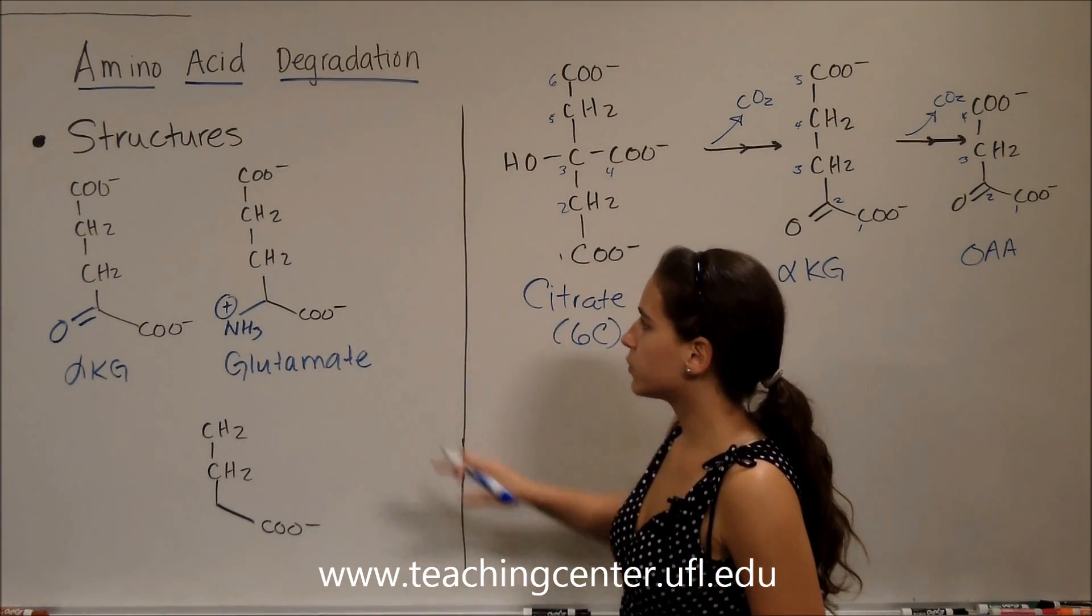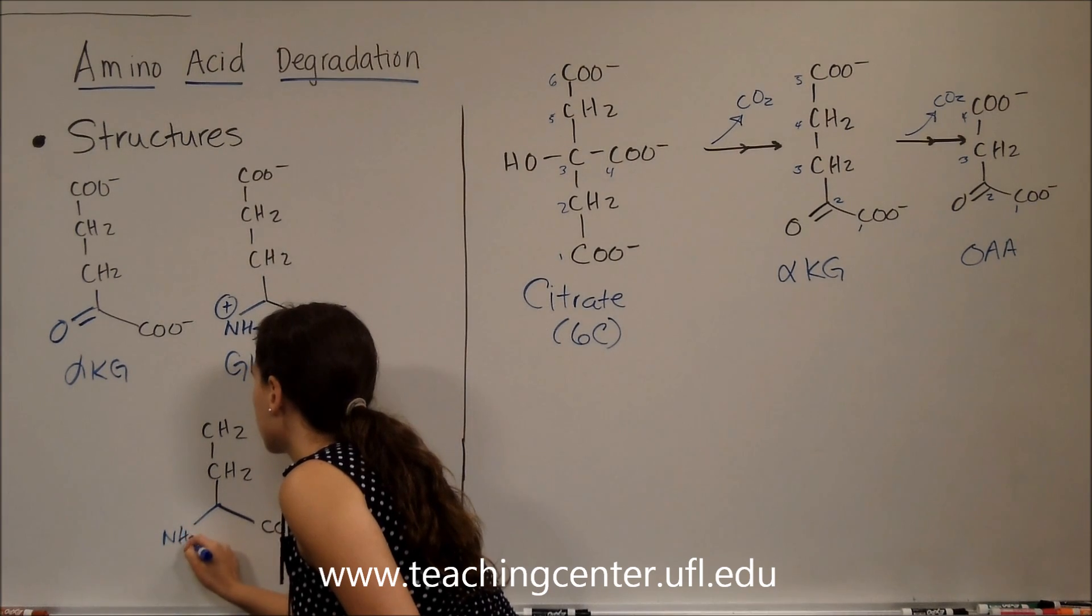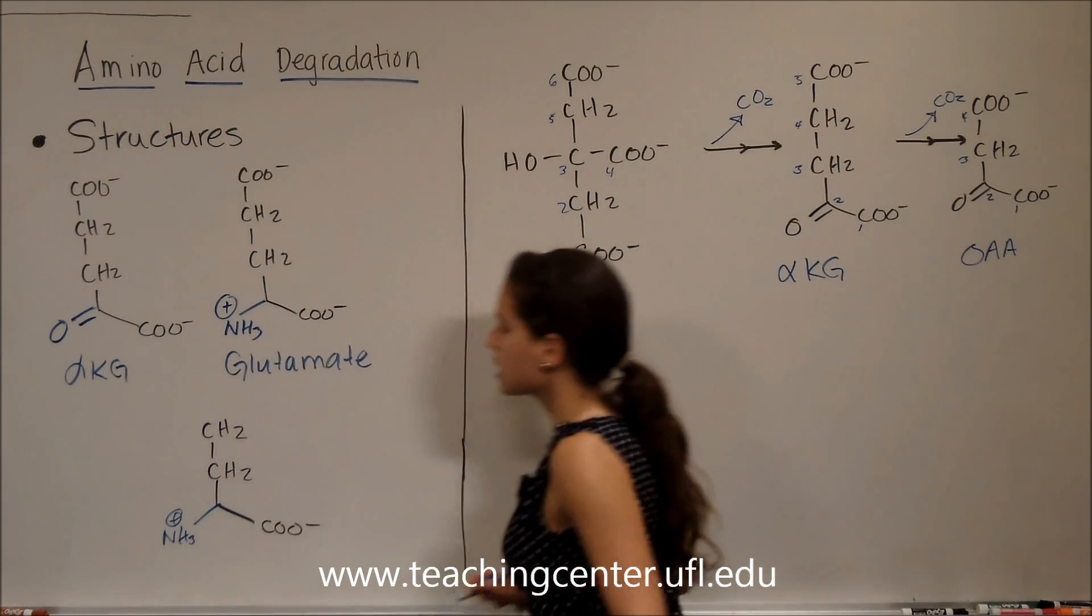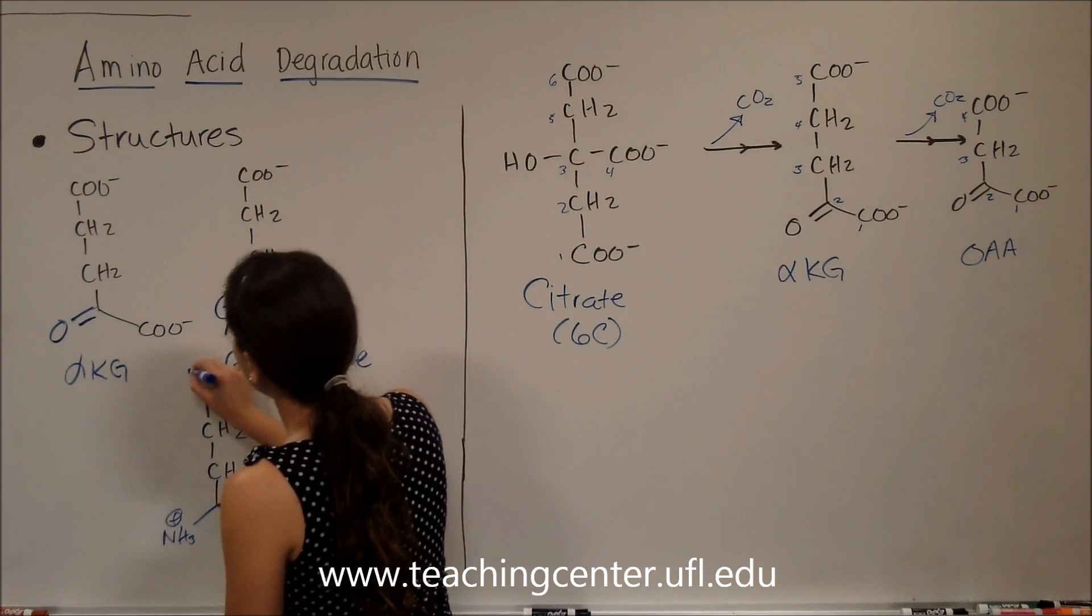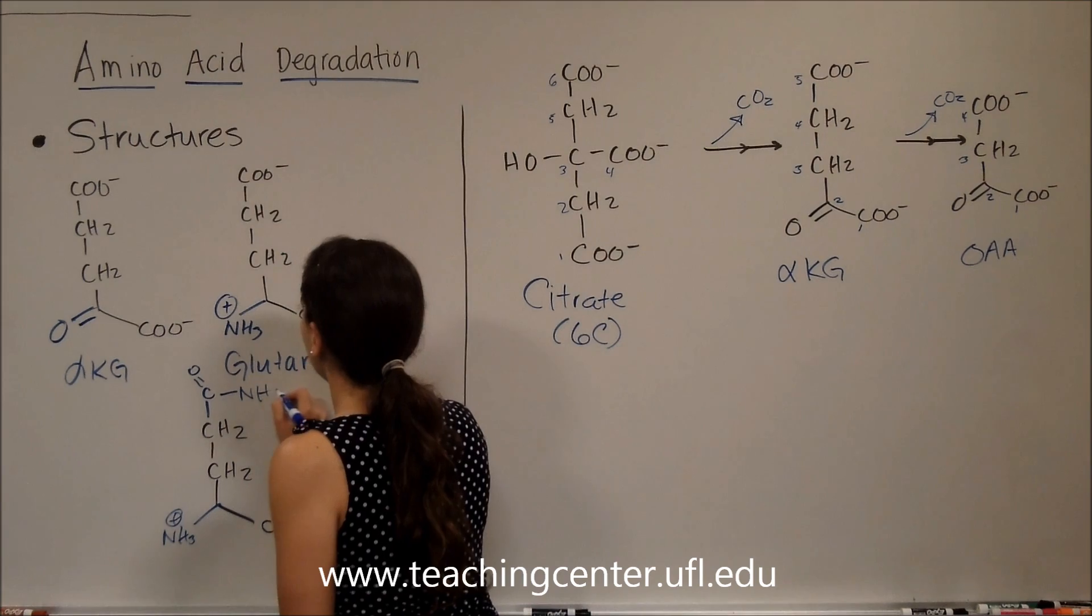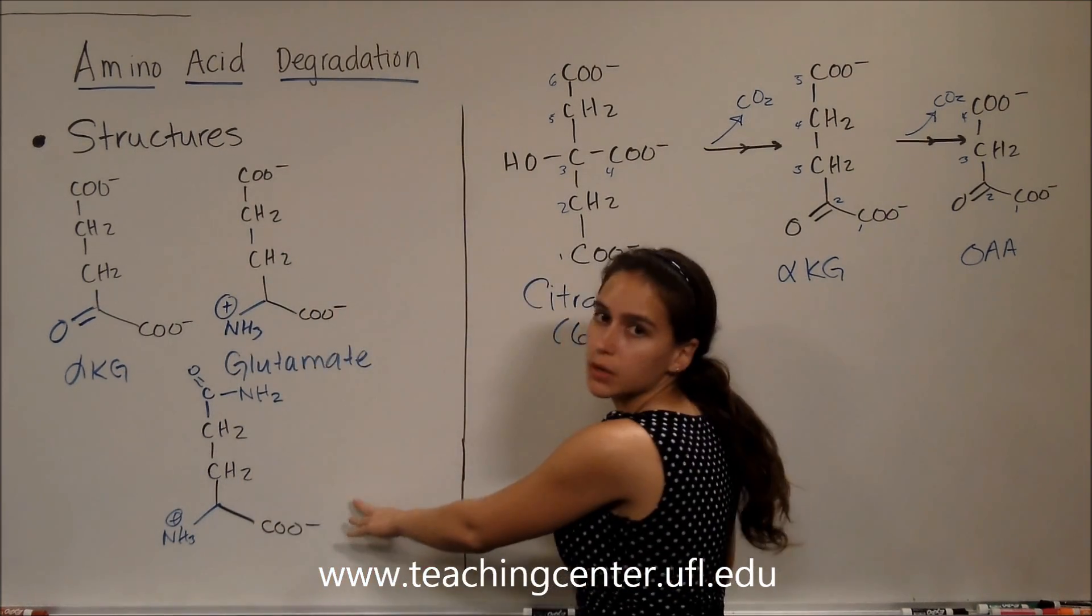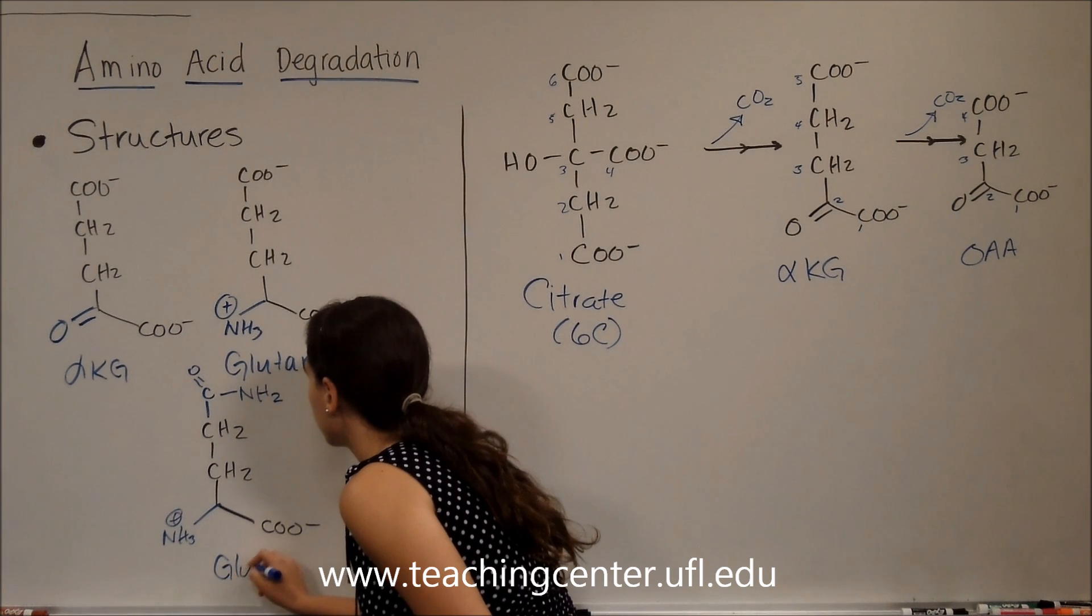So what happens if to this glutamate backbone, we kept that NH3 over here, and we added another NH3 up here to that carboxylic acid? We make yet again another amino acid by adding an amino group, and that would be glutamine.